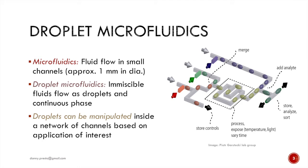These droplets can be manipulated inside a microfluidic network where they can be processed based on need. They can be subject to different conditions — merged, split, synchronized, sorted, and incubated. The idea is to carry out several of these processes that are normally carried out in a lab on a very small chip that contains these channels. Hence they get the name lab-on-a-chip technology.